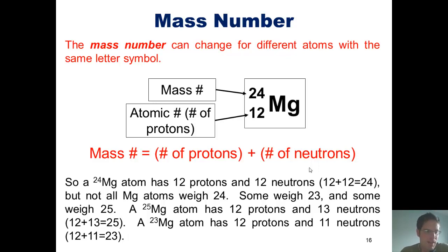So a magnesium-25 atom has 12 protons and 13 neutrons, because 12 plus 13 is 25, while a magnesium-23 atom has 12 protons and 11 neutrons.